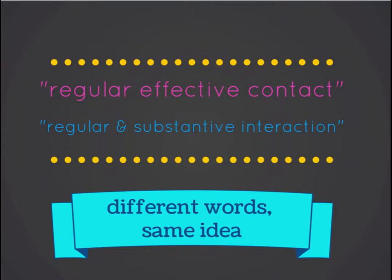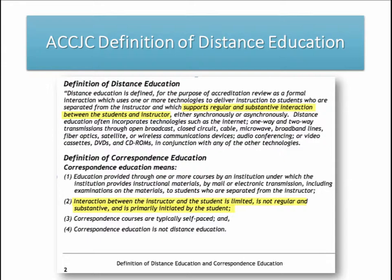The reason we have these two different phrasings is because they come from different agencies. The ACCJC definition, which aligns with the U.S. Department of Education, uses regular and substantive interaction, and as you can see from the highlighted parts on this slide, that is embedded in the definition of a distance education course as opposed to a correspondence course, which does not have that regular substantive interaction between the instructor and the student.